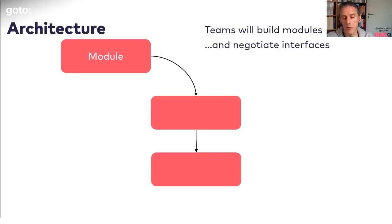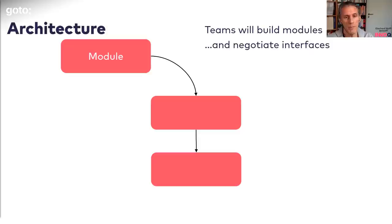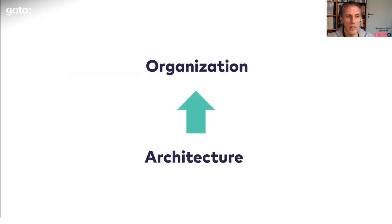You might end up with teams that have specialists for a specific technology: a UI specialist, a backend specialist, and a database specialist. That means you end up with three layers and three artifacts, and any change will probably go through all of them. Changes will go through a lot of teams and modules, causing a lot of communication between those teams — and that's not the best idea.